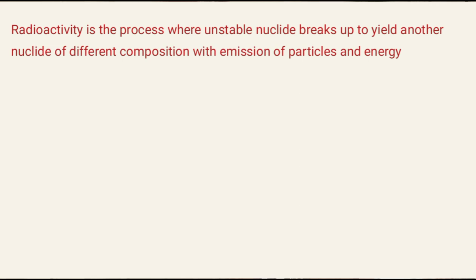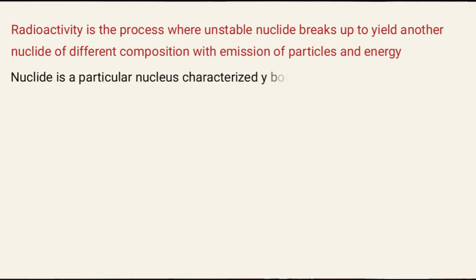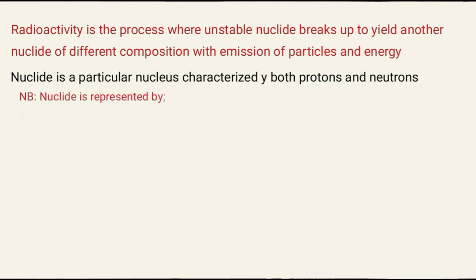What is a nuclide? A nuclide is a particular nucleus that is characterized by both protons and neutrons. Usually, a nuclide is represented by its atomic number and mass number — mass number is also called atomic mass.